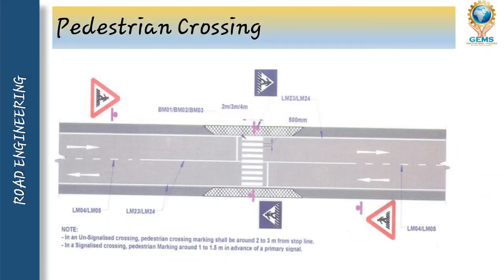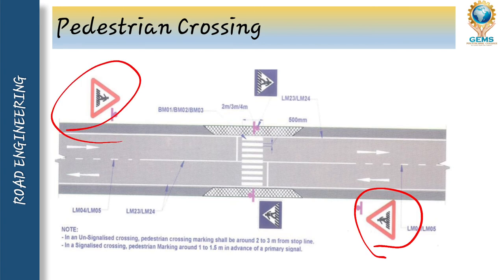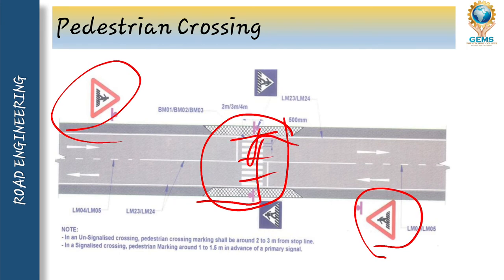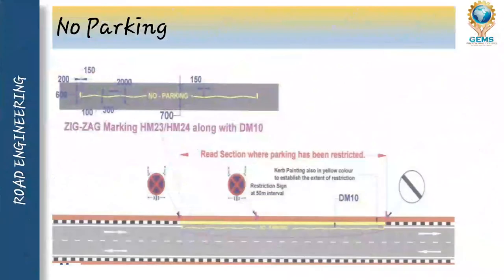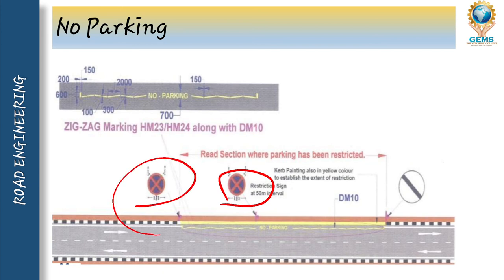Pedestrian crossing: this image shows pedestrian crossing markings. At signalized crossings, pedestrian crossing markings shall be around 2 to 3 meters for the stopping lane. Signals are placed on both sides and the markings show where pedestrians can stand and cross the road safely. Next is no parking: the no parking symbol is placed on the road where there is a damaged, cut, or repair road, and no stopping of vehicles shall be done at these locations.